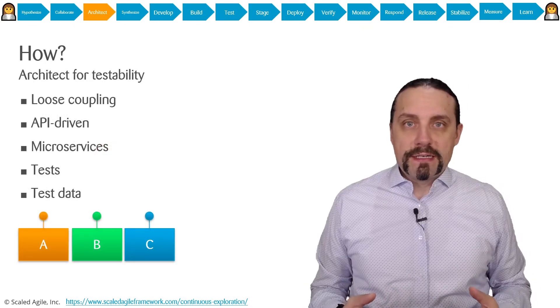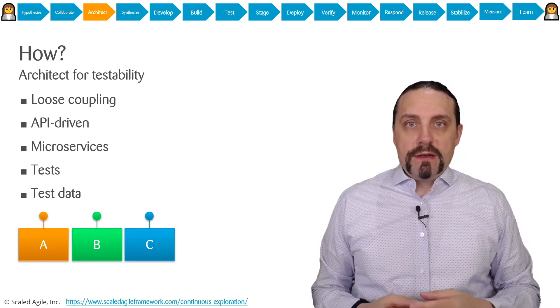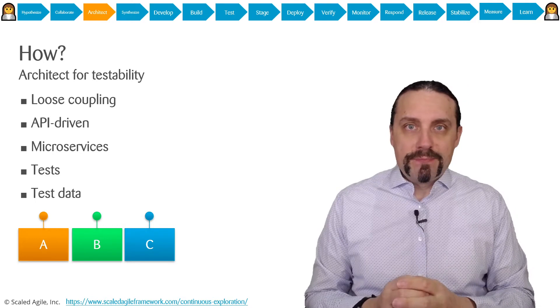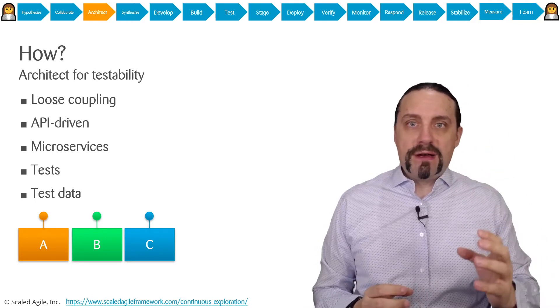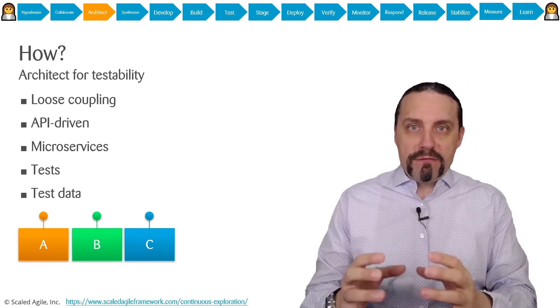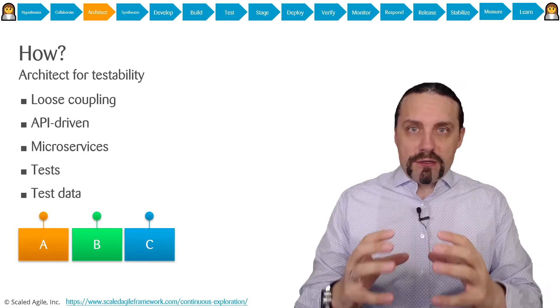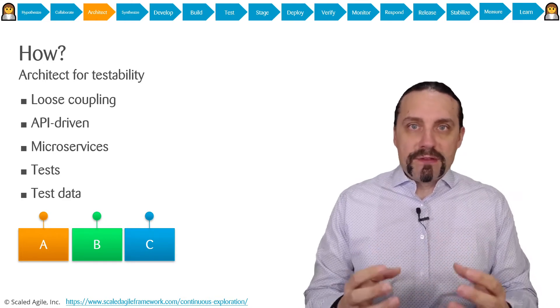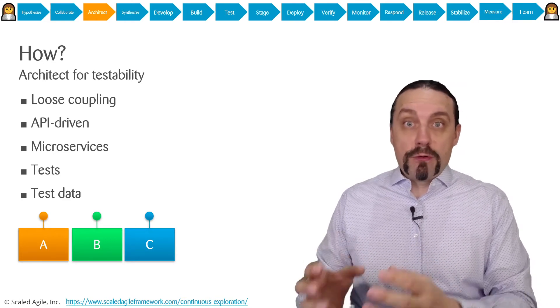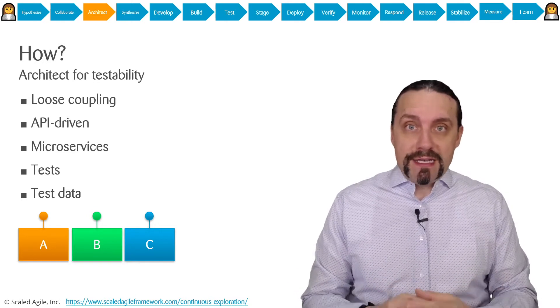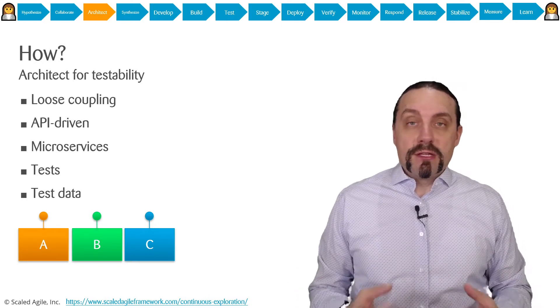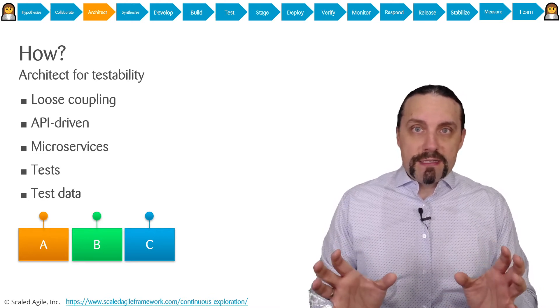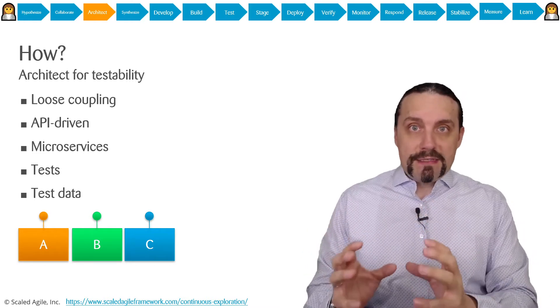As architects and developers, we need to focus our architecture on testability. We need to think about how we're going to verify what we're building. This is architect for testability, and for that we need proper tests and test data. But we also need to architect our system so we can test it properly.